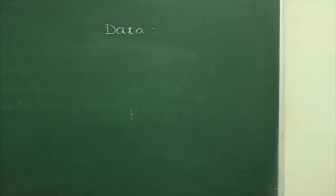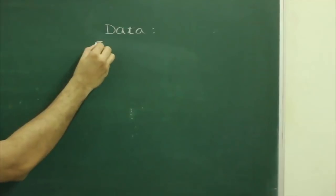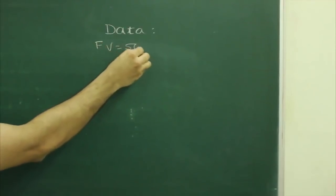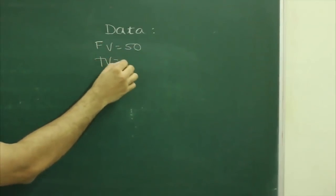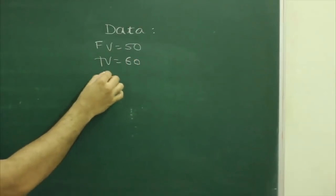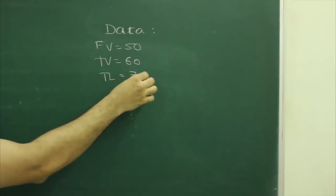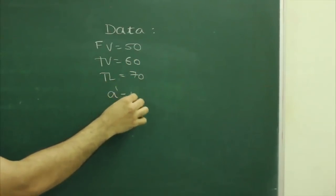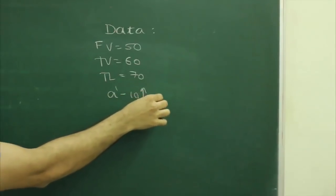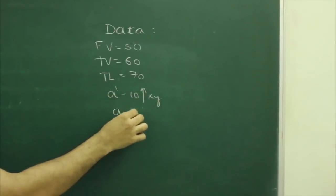So, now we will write given data: front view 50 mm, top view 60 mm, true length 70 mm, above x-y, 9, a, 20.